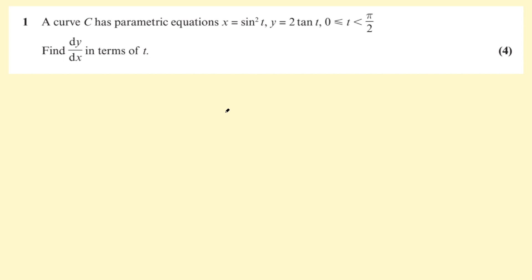This will be a quick video on parametric equations. The question says a curve C has parametric equations x equals sine squared t and y equals 2 tan t, where t is between 0 and pi over 2. Find dy/dx in terms of t.